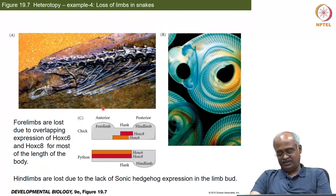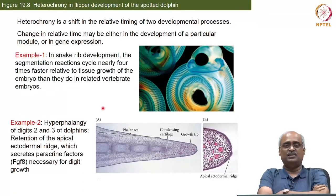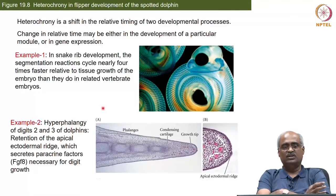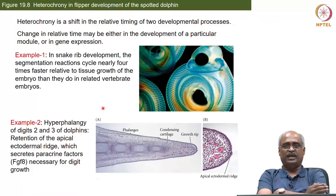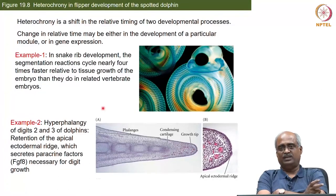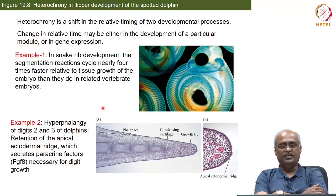The next category is heterochrony — a change in temporal expression, meaning when a gene is expressed and for how long. If something is expressed for a short period at a certain developmental stage instead of a longer period, that is heterochrony. The word derives from chronology and chronometer — it connects to time. Both the start of expression and the duration of expression can vary, and both kinds of chronological changes can lead to anatomical and morphological differences within a single lineage.